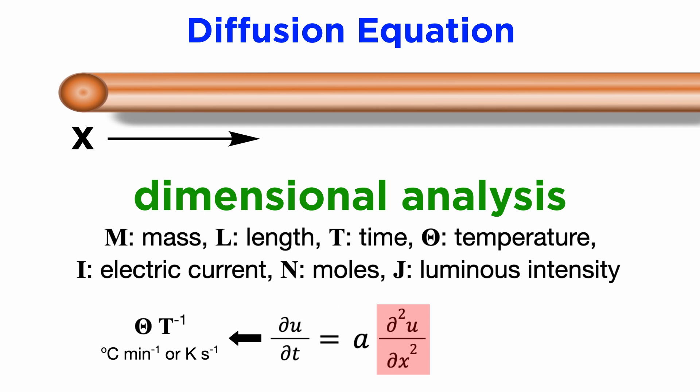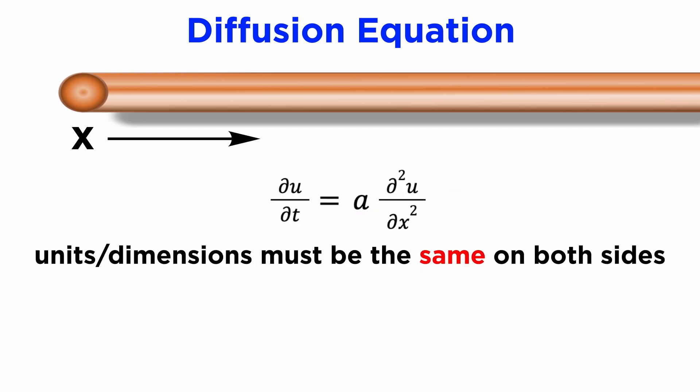We can do the same for the other term in our PDE, partial squared u partial x squared, to find its dimensions as capital theta capital L to the minus two, since it is the ratio of a temperature to a length squared. Now since our PDE represents a real physical process, namely diffusion, the units, and hence dimensions of both sides of the PDE must be equal.